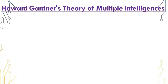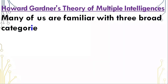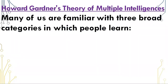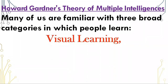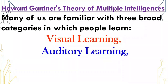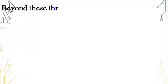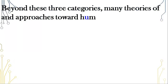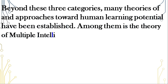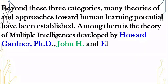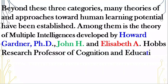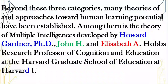How about Gardner's theory of multiple intelligences? Many of us are familiar with the three broad categories in which people learn: visual learning, auditory learning and kinesthetic learning. Beyond these three categories, many theories and approaches towards human learning potential have been established. Among them is the theory of multiple intelligences developed by Howard Gardner.